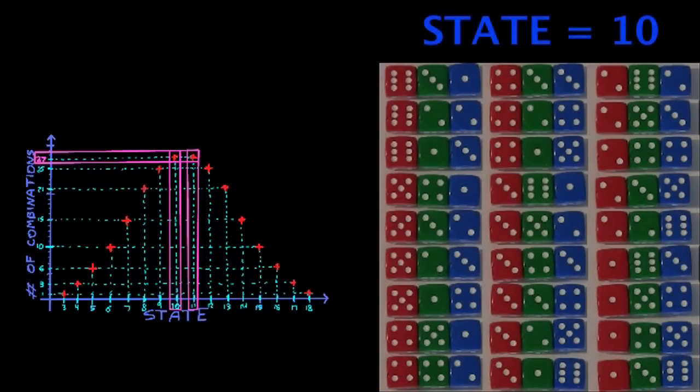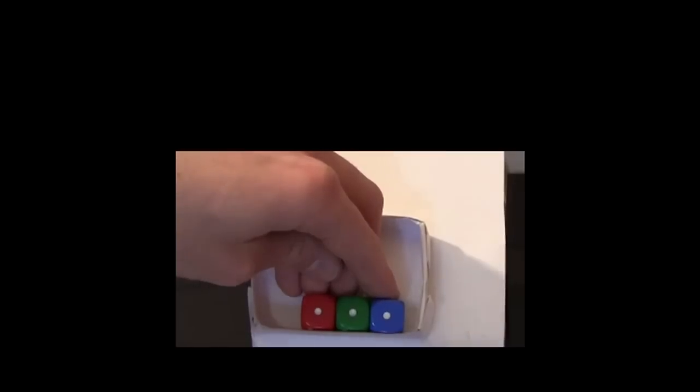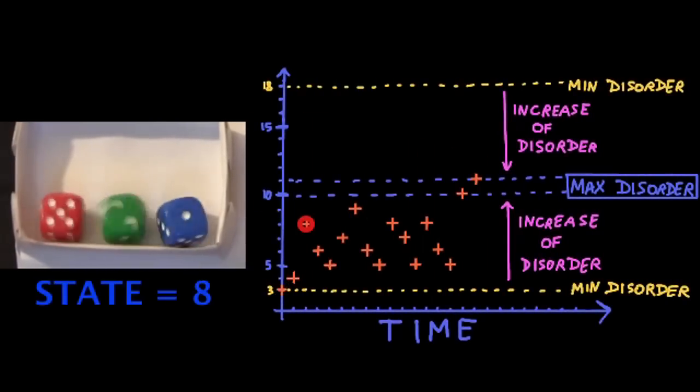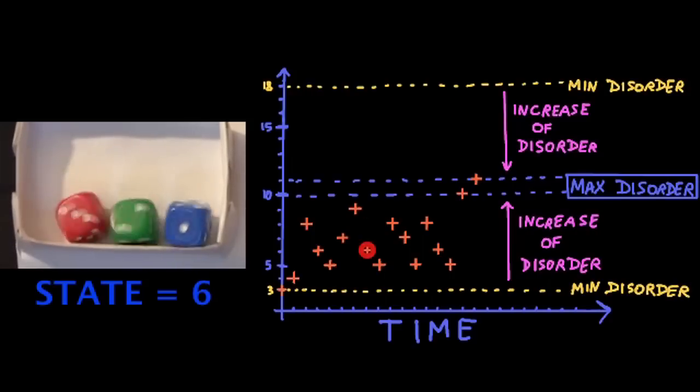Okay, so why is it useful? Because it tells us how our experiment is more likely to evolve. In fact, as the dice change randomly, they're more likely to produce a 10 or an 11 than a 3 or an 18, because 10 or 11 are much more disordered states. You can see here that the state jumps a lot, but that's because we're only using 3 dice.